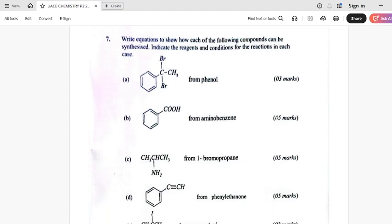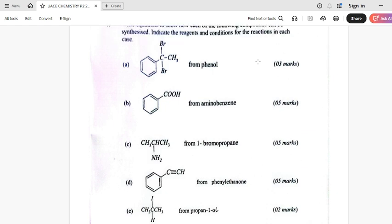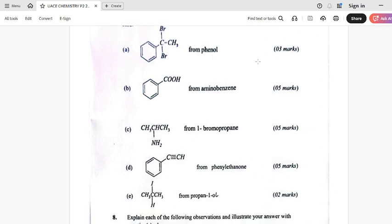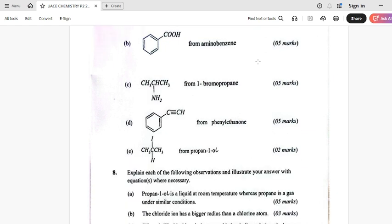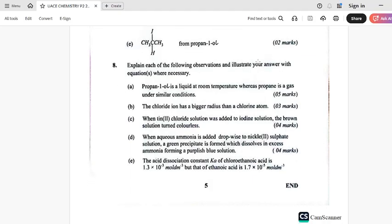Number seven is there. It is about synthesis. Write equations to show how each of the following compounds can be synthesized. Indicate the reagents and conditions for the reaction in each case. So that is number seven. Hope you can see part A, part B, part C, D, and E. Then number eight is also there. Explaining the following observations, and in last place your answer with the equations where necessary.